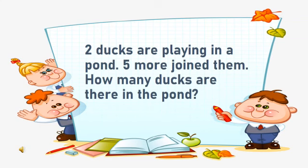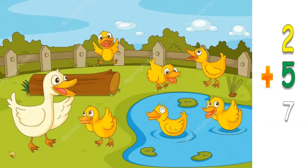Now let's solve another problem. 2 ducks are playing in a pond. 5 more joined them. How many ducks are there in the pond? As you can see in the picture, 2 ducks are playing in the pond. Suddenly 5 more came and joined them. Now you have to count the total number of ducks: 1, 2, 3, 4, 5, 6, 7. So altogether 7 ducks are playing in the pond!